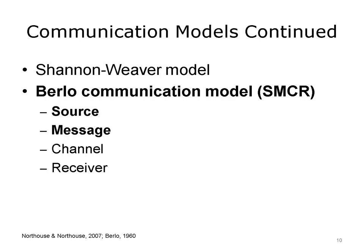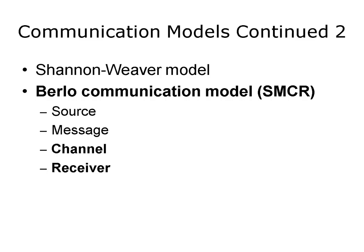The next component of the SMCR model, the message, has its own unique characteristics such as structure and content code. The structure of a message refers to how a message is arranged. The code is the form in which the message is sent, such as by using language or gestures. The third component, channel, deals with how or by what avenue the message is sent or received, such as seeing, touching, smelling, and/or tasting.